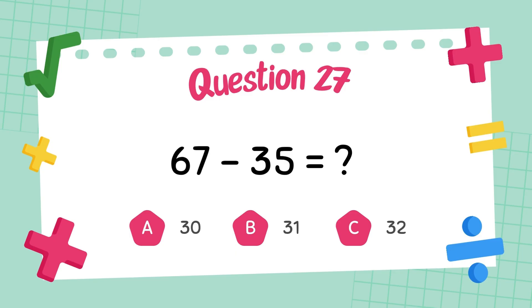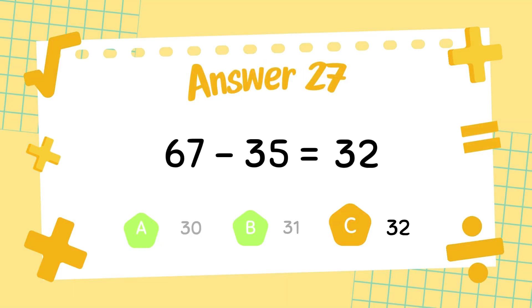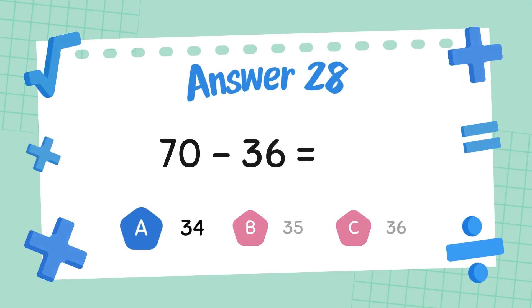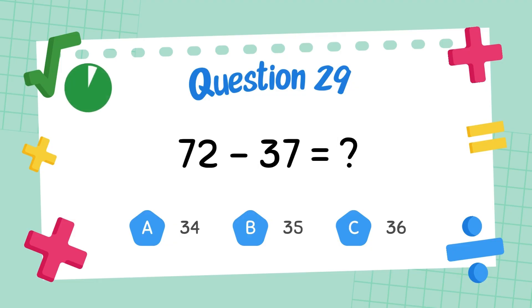What is 67 minus 35? The answer is 35. What is 70 minus 36? The answer is 32. The answer is 34.